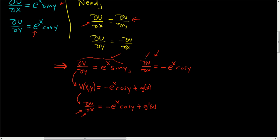Over here we have del v del x as well. We set this equal to del v del x: minus e to the x cosine y. Adding this to both sides, we get g prime of x equals 0. Integrating with respect to x, we get a constant c.